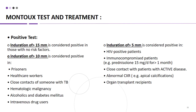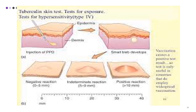A positive test is induration of more than 15 mm if the patient has no risk factors, or more than 10 mm with risk factors. Risk factors include prisoners, healthcare workers, close contact with a TB patient, hematological malignancy, alcoholism, diabetes mellitus, and IV drug users. Induration of more than 5 mm is considered positive in HIV-positive patients, immunocompromised patients taking steroids such as prednisolone for more than one month, close contacts of active disease patients, those with abnormal chest X-ray showing apical calcifications, and organ transplant recipients.